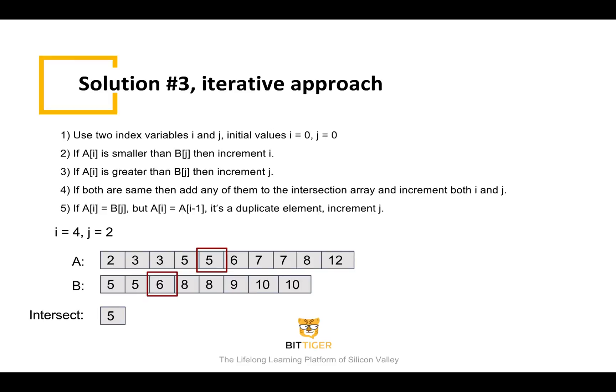Now i is equal to four, and j is equal to two. A of four is equal to five, and B of two is equal to six. Since five is smaller than six, we increment i to five. So if we keep doing this while we iterate through the rest of the elements in the array, the intersection array will be formed.